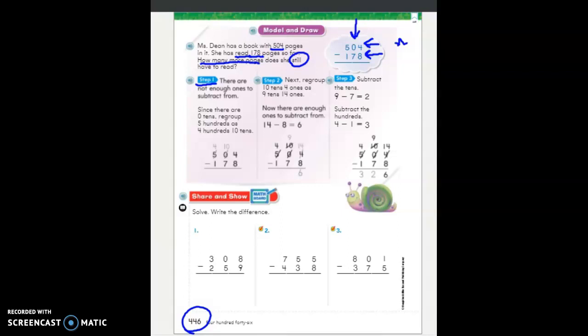So let's look at step 1. Step 1, there are not enough ones to subtract from. This 4 is less than 8. So that means we need to go next door. So our 0 is the problem, isn't it? We can't get anything from our 10. So we're going to go next to our 5. And that becomes a 4. Then we can give that to our 0. And that becomes a 10.